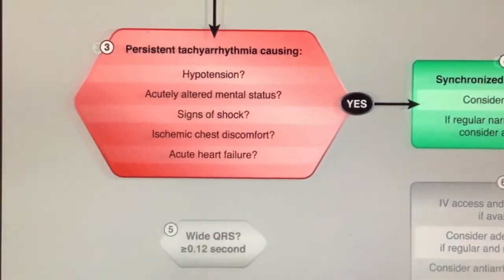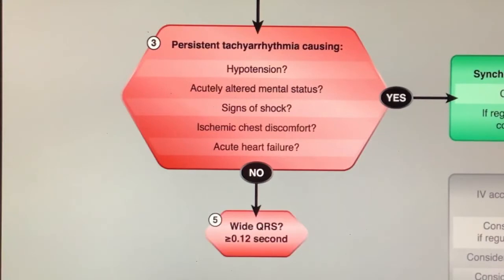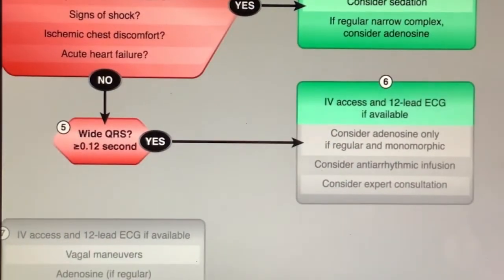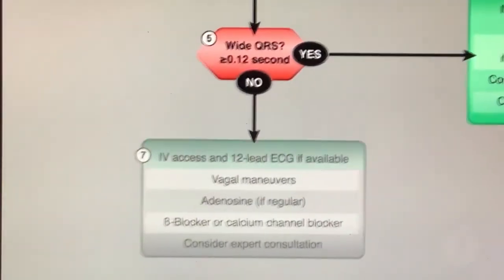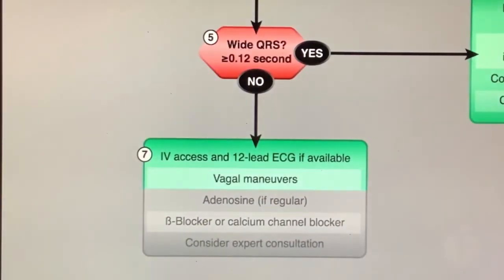On the other hand, if the patient is stable, the treatment path is determined by whether the QRS is wide or narrow, and whether the rhythm is regular or irregular. If a monomorphic wide complex rhythm is present and the patient is stable, expert consultation is advised because treatment has the potential for harm. The therapy for narrow QRS with regular rhythm is to attempt vagal maneuvers and, if unsuccessful, administer adenosine.